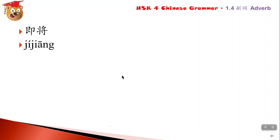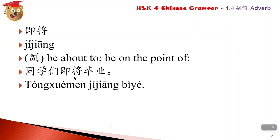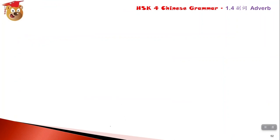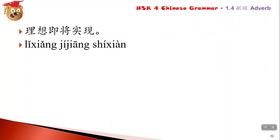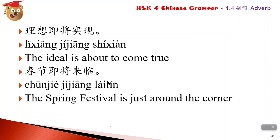即将 means 'about to' or 'going to happen soon.' For example: 同学们即将毕业 - students are going to graduate. 理想即将实现 - your dreams or ambitions are about to come true. 春节即将来临 - Chinese New Year (Spring Festival) is just around the corner.